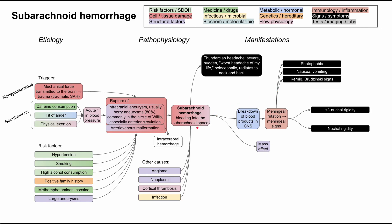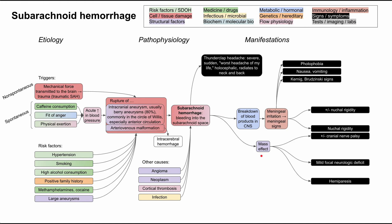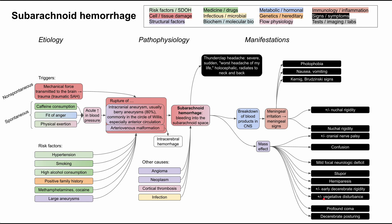Blood in the subarachnoid space can also cause a mass effect with several downstream mechanisms. It can cause a focal neurologic deficit ranging from a mild cranial nerve palsy to inability to move an arm or leg, or total hemiparesis, depending on the amount of blood. Decerebrate posturing can occur and is a more severe, very concerning sign. The mass effect can also cause varying degrees of altered mental status — from confusion to stupor, vegetative disturbances, or profound coma.